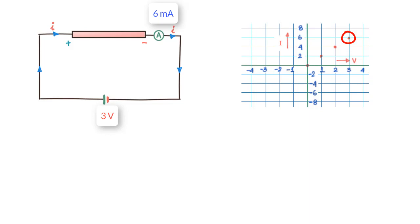If we connect these points what we see is that we get a straight line plot between the applied voltage and the current that flows through the resistor.